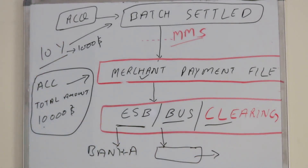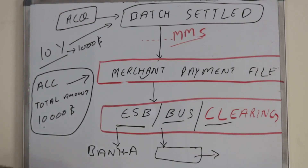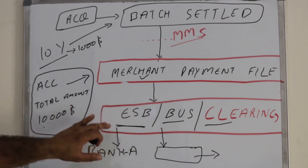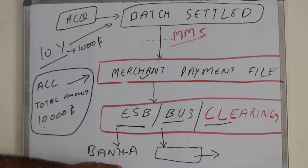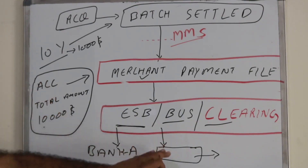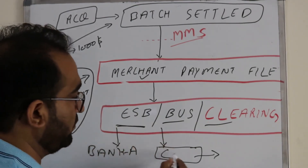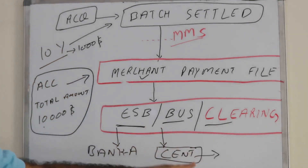For example, when you do an online transaction transferring money from one bank to another using internet banking, your transaction is actually submitted to the centralized bank. The same applies here: if the merchant has an account in the same bank, the ESB submits the file directly; otherwise, it goes to the centralized bank, which processes it and credits the merchant's current or saving account.